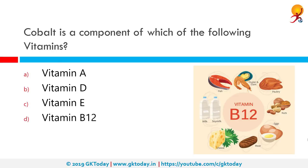Cobalt is a component of which vitamin? The correct answer is Vitamin B12. Vitamin B12 deficiency may lead to a reduction in healthy red blood cells and result in anemia. The nervous system may also be affected. Symptoms are rare but can include fatigue, breathlessness, numbness, poor balance, and memory trouble.